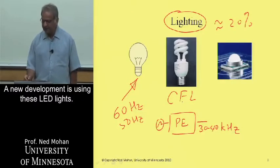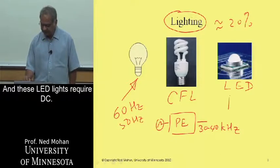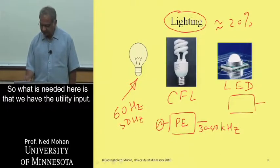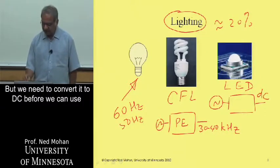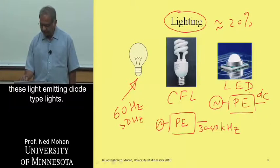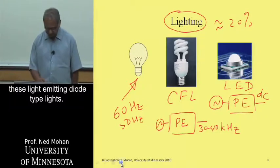A new development is using LED lights, which require DC. So what is needed here is that we have the utility input, but we need to convert it to DC before we can use these light-emitting diode type lights.